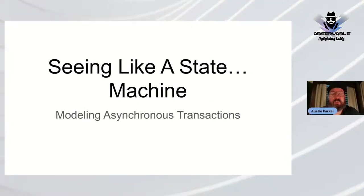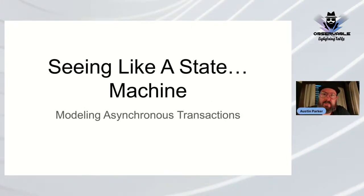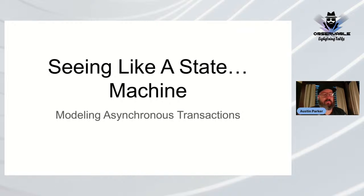Austin introduces himself as Head of Developer Relations at Lightstep, part of ServiceNow, working on a product called ServiceNow Cloud Observability. His role is helping developers understand observability and distributed tracing. He also works on the OpenTelemetry project as a community maintainer. He's currently writing a book on OpenTelemetry called 'Learning OpenTelemetry,' coming out in the fall from O'Reilly.